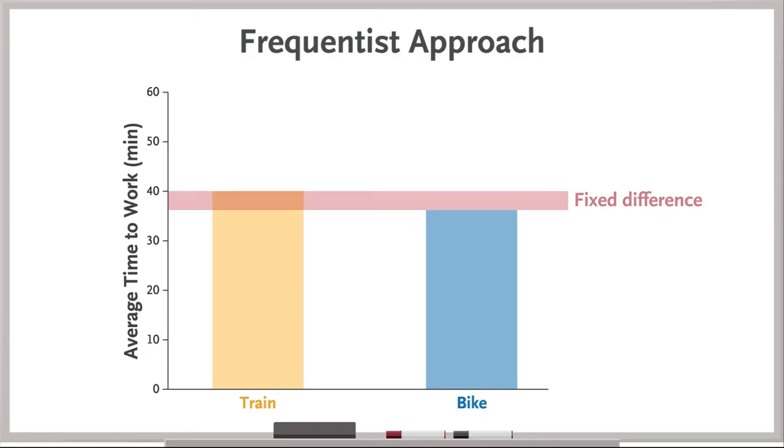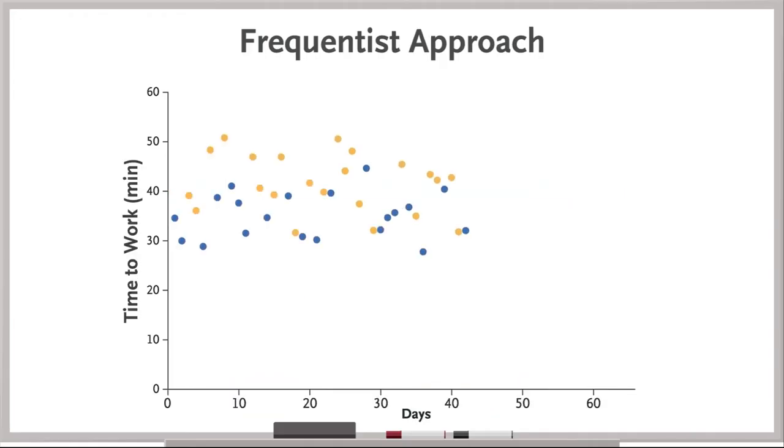In this case, the time to get to work. You don't know what this true difference is, but if you collect data for a period of time, you'll have a sample you can use to estimate it. The difference between cycling versus train riding in your sample is an estimate of the true difference.